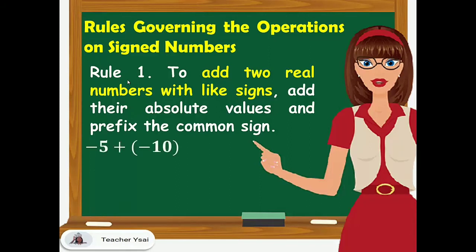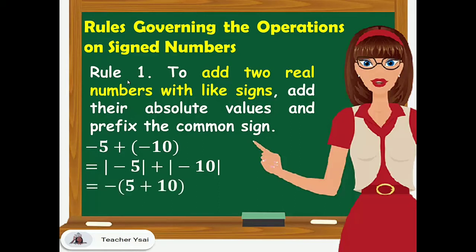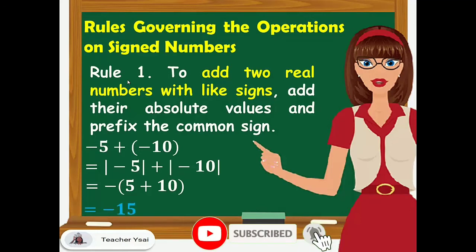Another example: negative 5 plus negative 10. First, we have to add their absolute values — the absolute value of negative 5 plus the absolute value of negative 10 — and we have to prefix the common sign, which is the negative sign. We have negative times (5 plus 10), giving a final answer of negative 15.